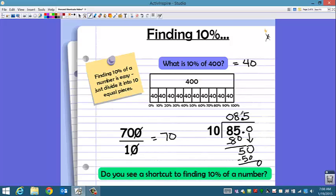What about 85 to 8 and 5 tenths? Again, the decimal moved over one place to the left. And that's your shortcut. To find 10% of a number, you move the decimal point one place to the left.